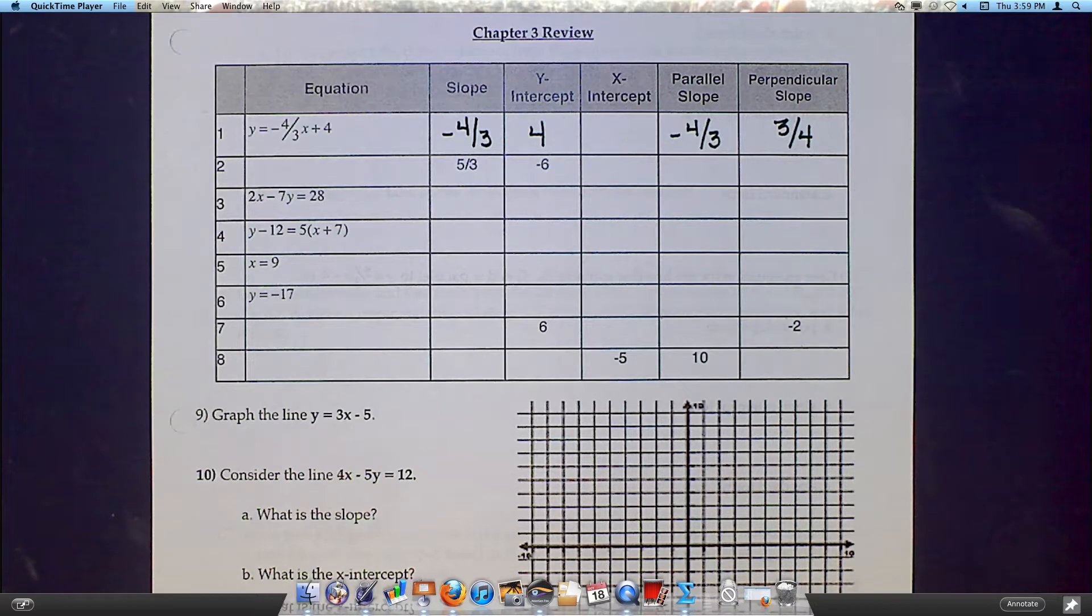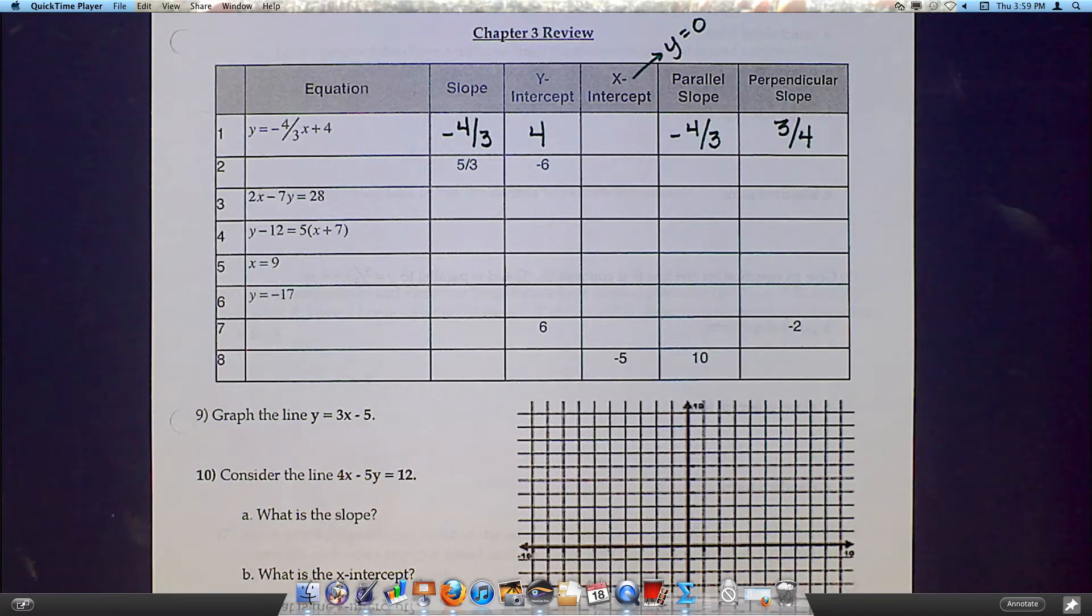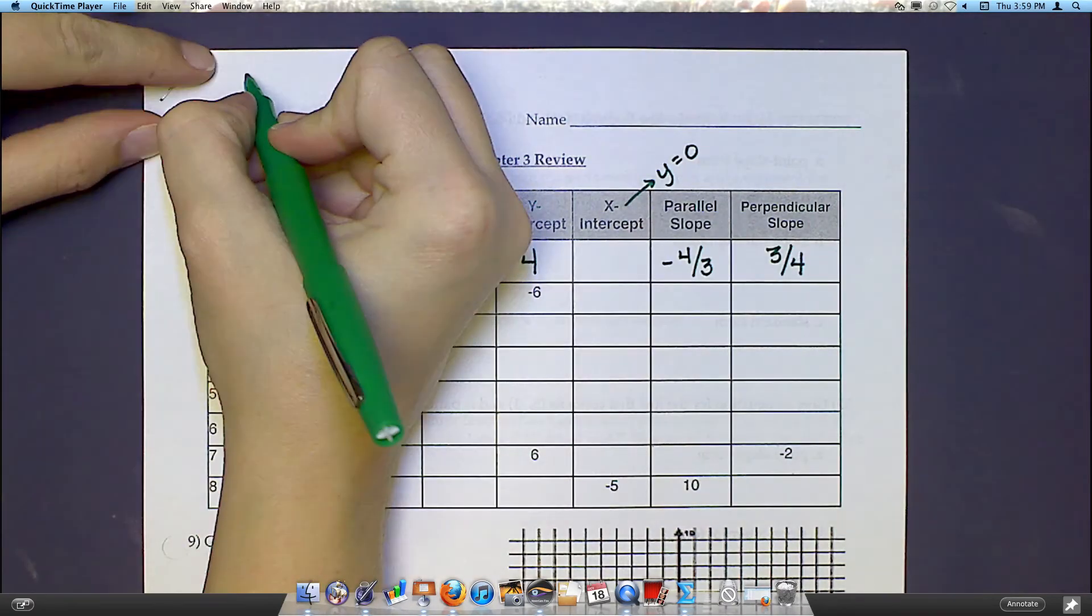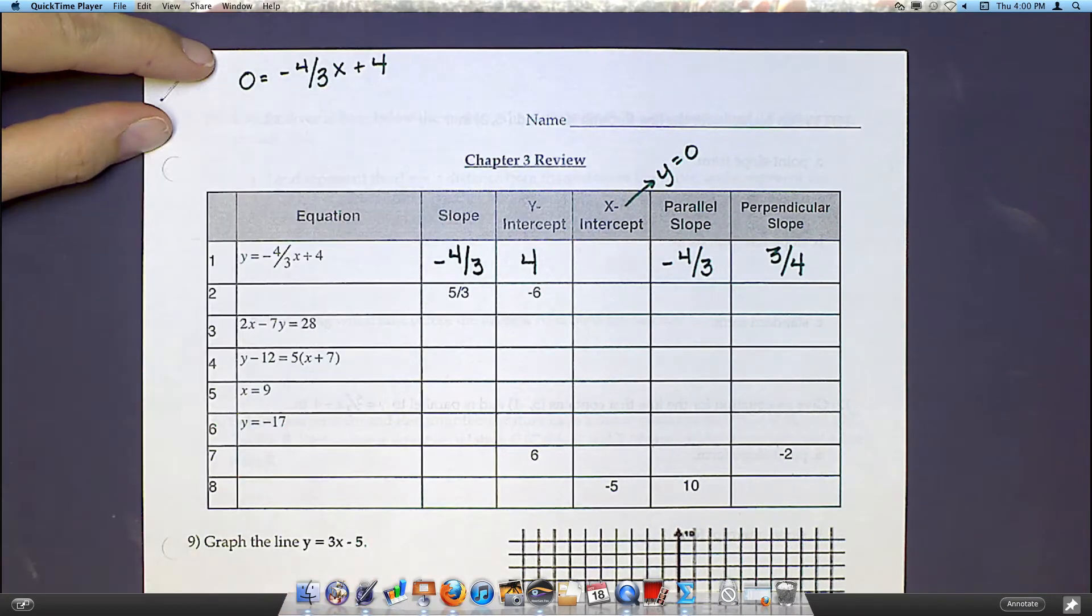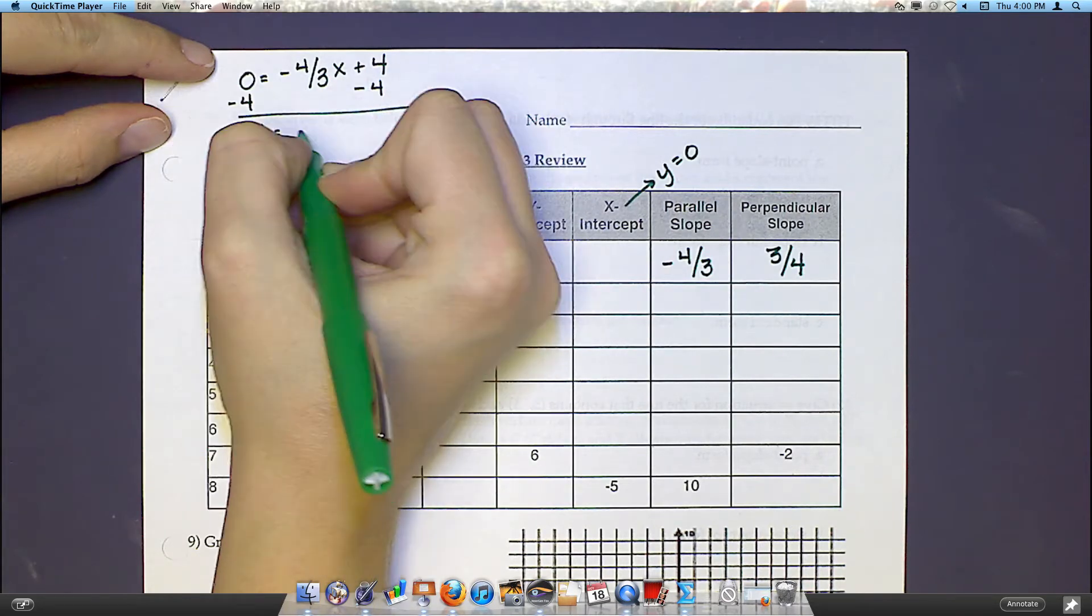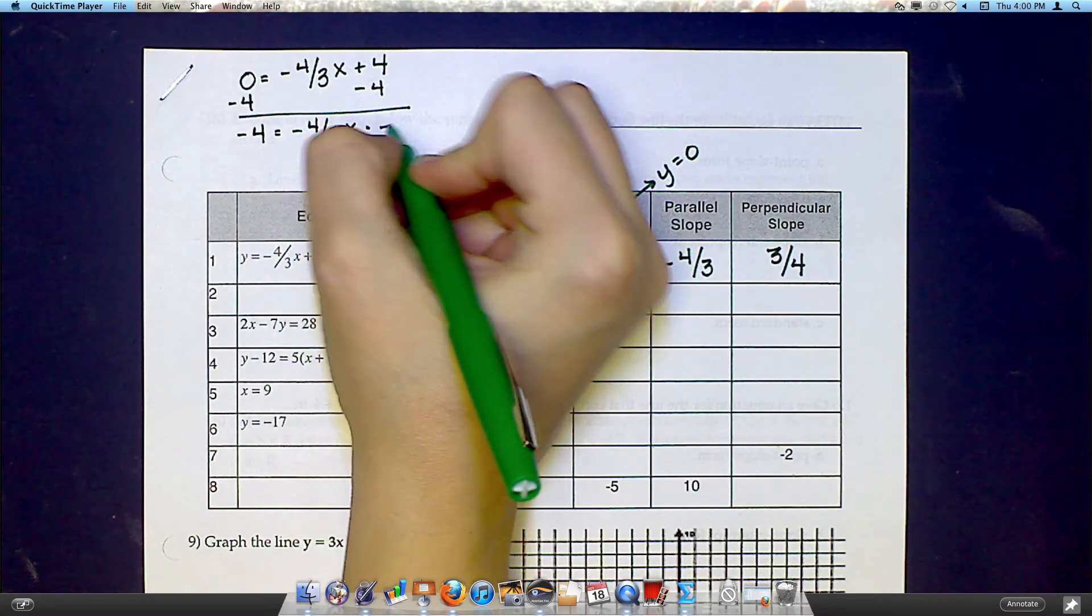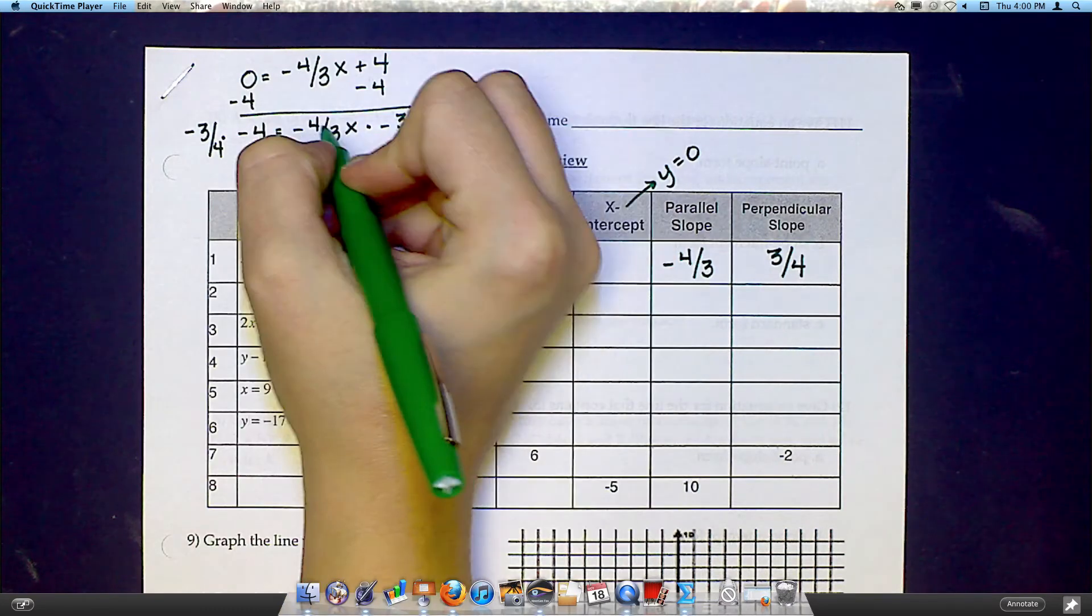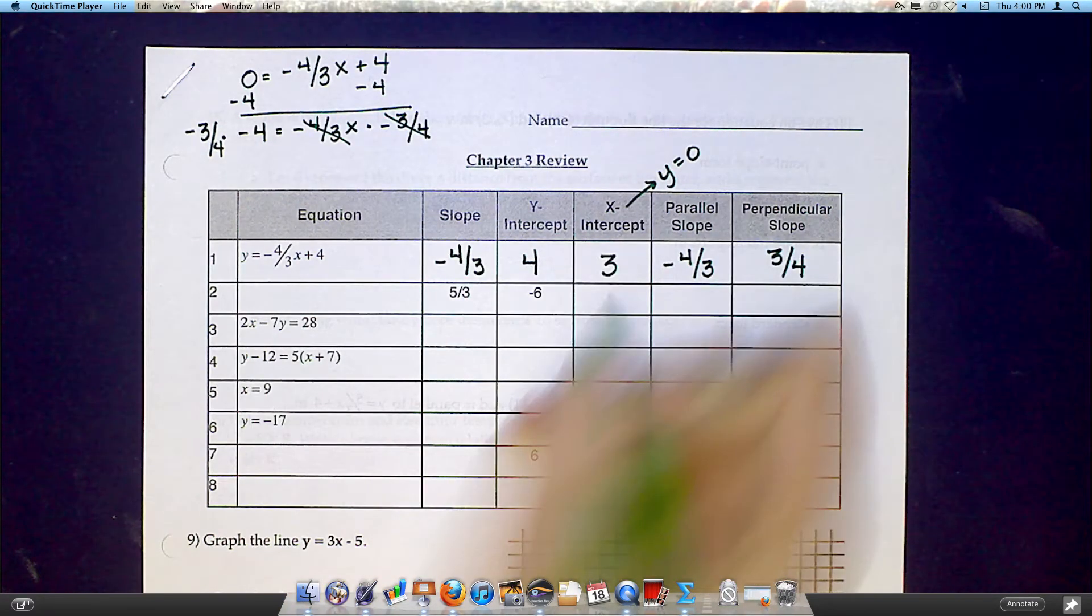Now, the x-intercept is a little harder, because to find the x-intercept, we always want to make y equal to 0. In my equation, I'm going to say 0 equals negative 4 thirds x plus 4, and now I'll solve. Let's subtract 4 and subtract 4, and I'll end up with negative 4 equals negative 4 thirds x. Then, the easiest way to get rid of that negative 4 thirds would be to multiply by the reciprocal, negative 3 fourths. So these will cancel, and when you do this multiplication in your calculator, you should find that the answer is positive 3 for your x-intercept.